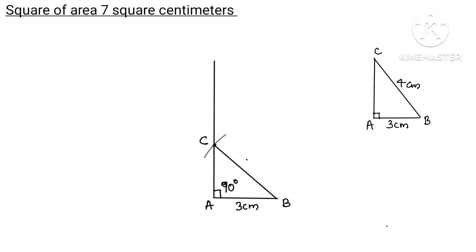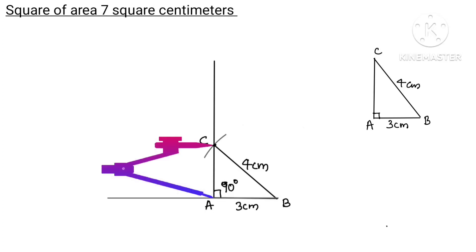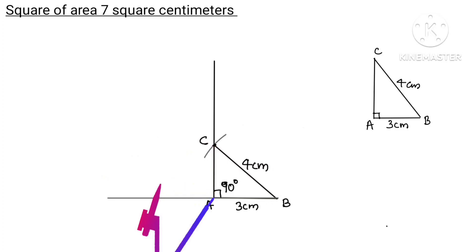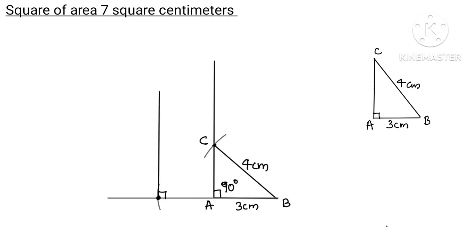Now complete the right angle triangle. We want to add the square on the height side. Extend the height line and make a compass length equal to AC. Add an arc, then add two sides to AC and E. Draw a perpendicular to this point using a protractor, set square, or compass.